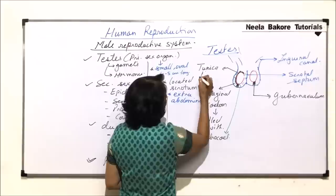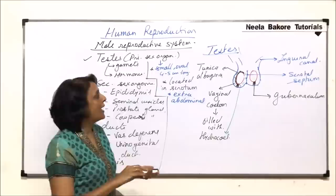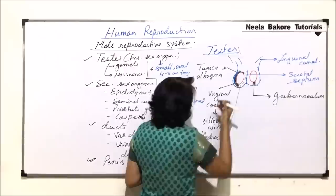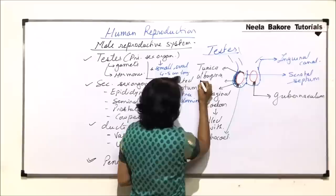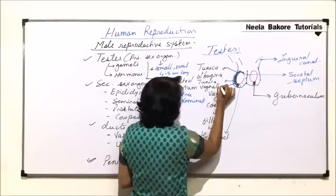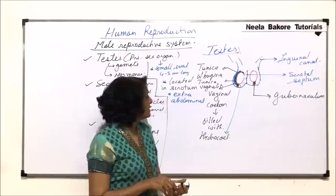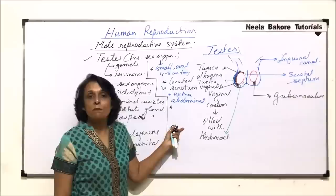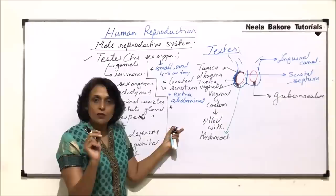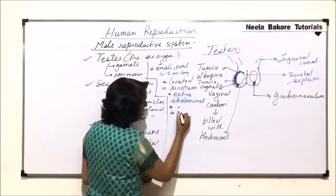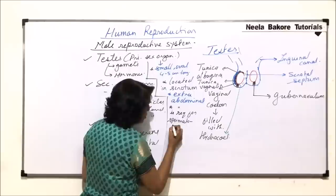Outside the tunica albuginea is present one more layer known as the tunica vaginalis. So there are two layers which protect the testis. This is how the testes are placed in the scrotal sac. The reason why the testes are extra-abdominal is very important — for spermatogenesis, the temperature required is approximately two degrees below the body temperature.